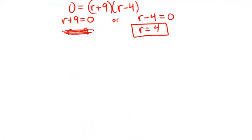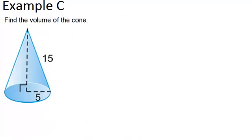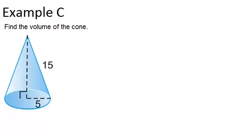Finally, let's look at example C. Find the volume of the cone. So to find the volume of a cone, what you have to do is pi r squared times the height divided by 3.